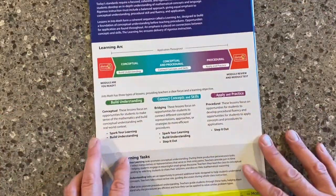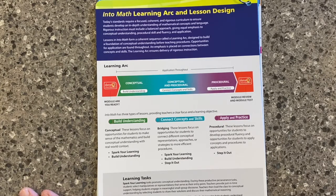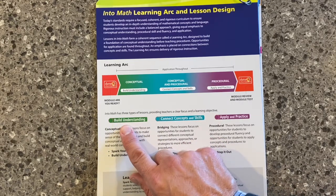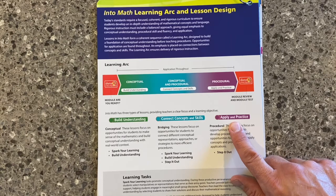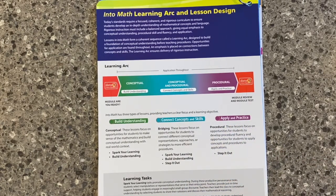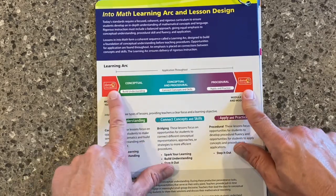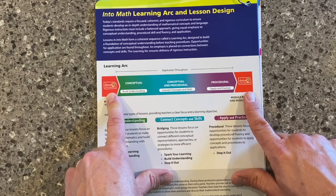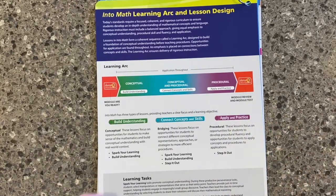One thing we need to make sure we all understand about Into Math is the learning arc and how that fits in with our lesson design. The learning arc includes three different types of lessons: the build understanding lessons, the bridging or connecting concepts and skills lessons, and the procedural apply and practice lessons. This takes us through different types of lessons for different types of learning, based on best practices and the latest research on what works in math classrooms. Sandwiching that learning arc are our data checkpoints — a critical function of the Into Math series — where we check student understanding before the unit, during the lessons, and at the end of modules and units, so those data checkpoints inform our instruction and lesson design.